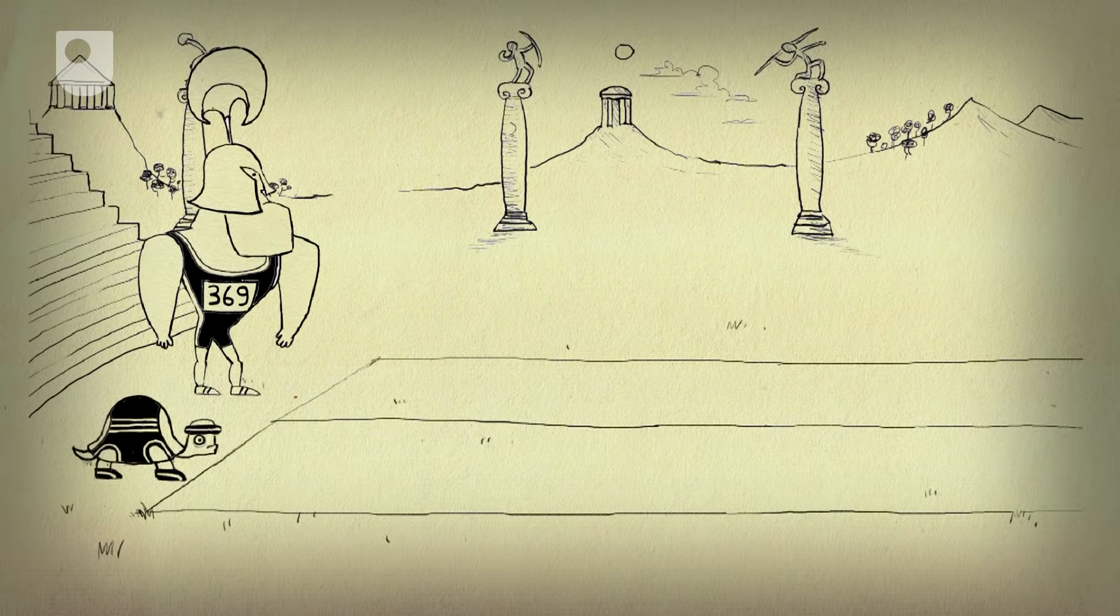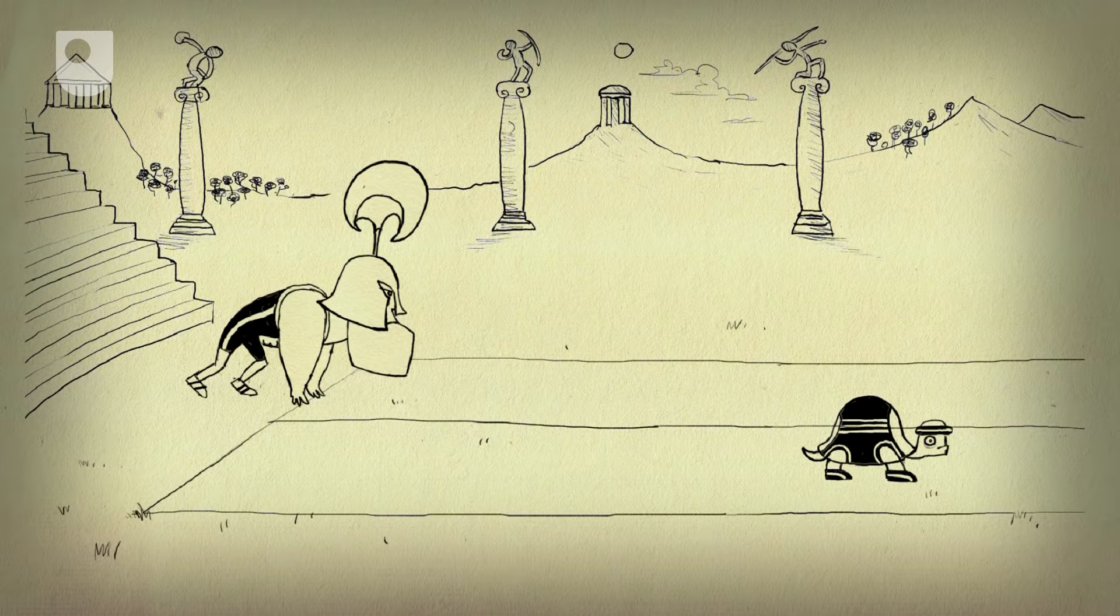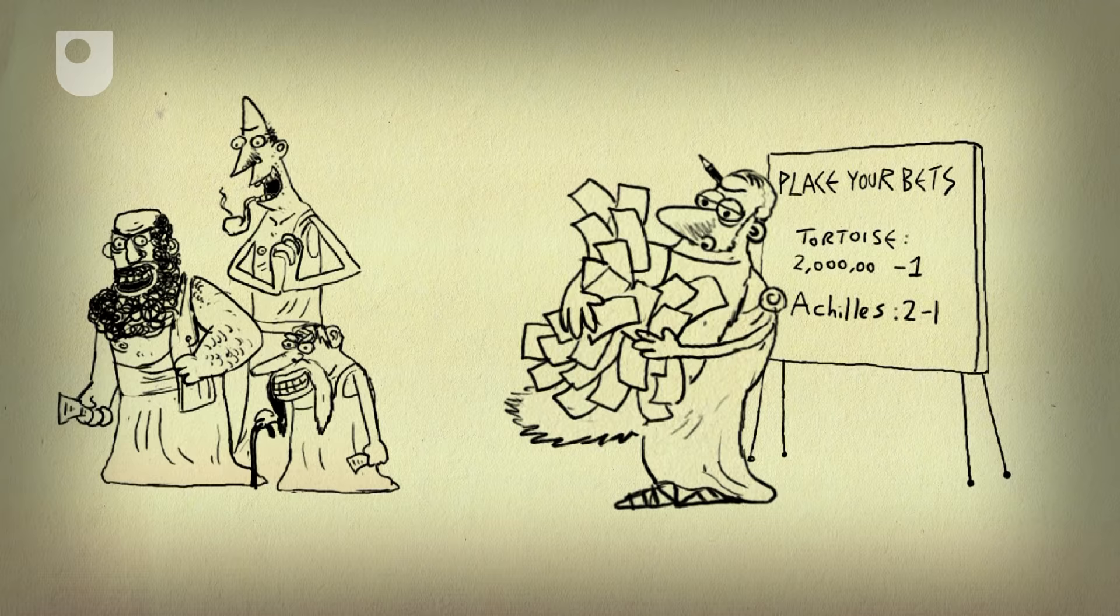First, the tortoise is given a slight head start. Anyone fancying a flutter would still rush to put their money on Achilles, but Zeno pointed out that to overtake him, Achilles would first have to cover the distance to the point where the tortoise began.